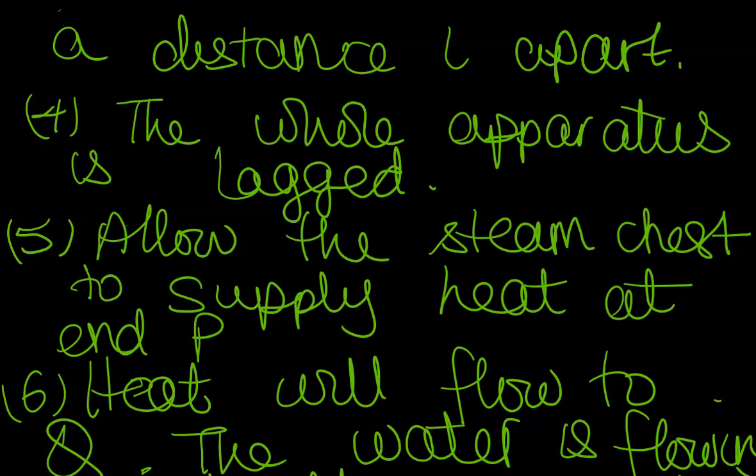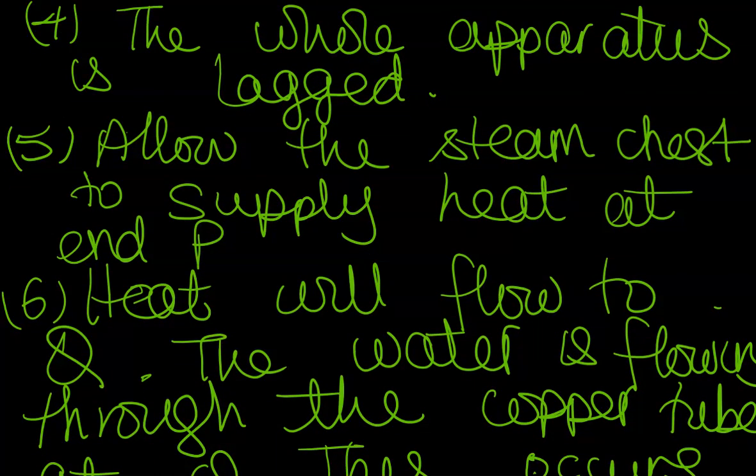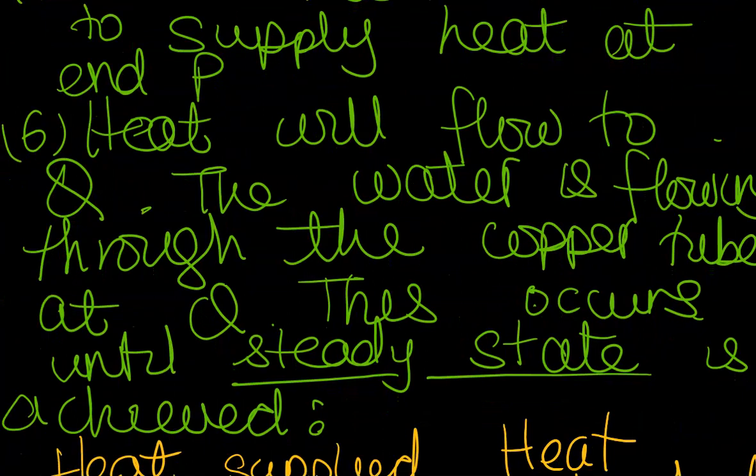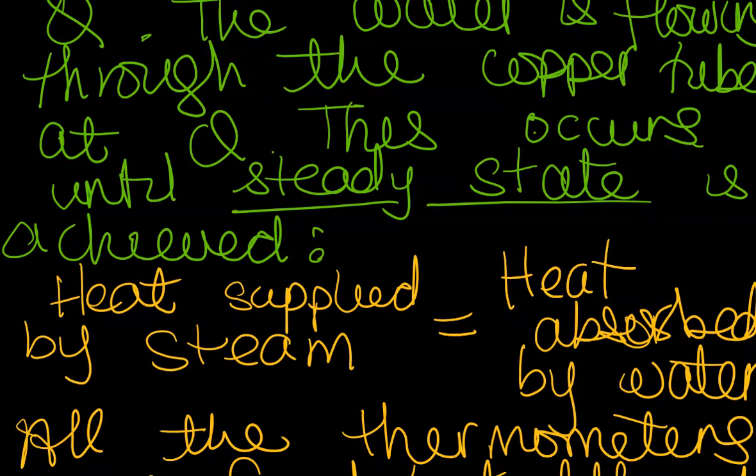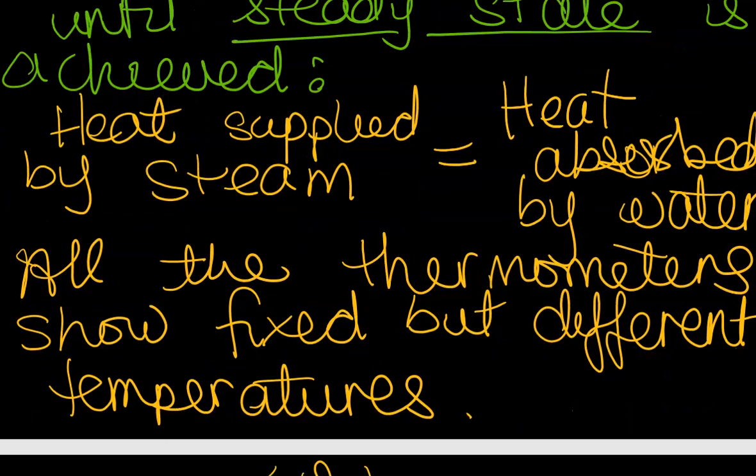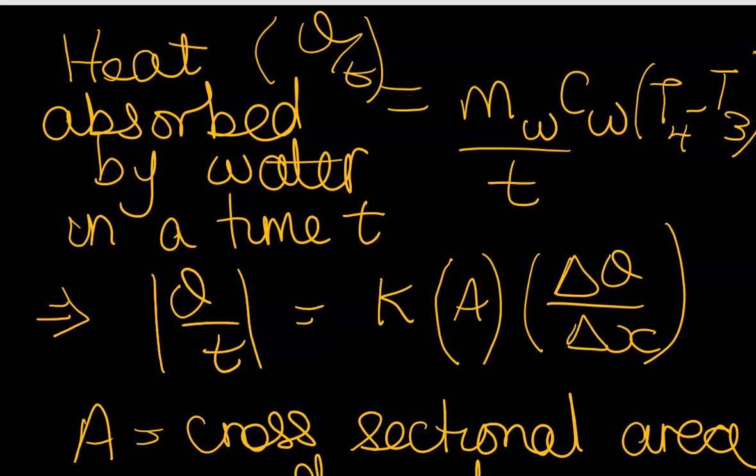The whole apparatus is lagged. Allow the steam chest to supply heat at the end P. Heat will flow to Q. And the water was flowing through the copper tube at Q. And this occurs until a steady state is achieved, where the heat supplied by the steam is equal to the heat absorbed by the water. All of the thermometers show a fixed but different temperatures. So Q over t is equal to mc delta theta over t.